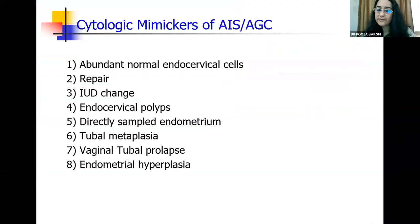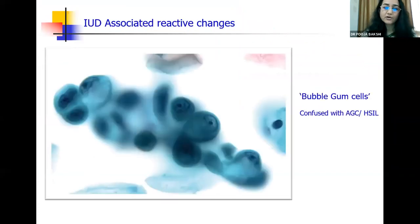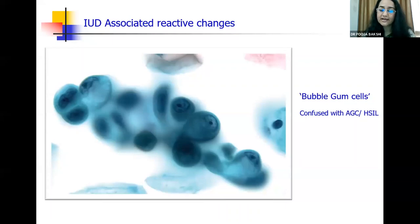There are many cytological mimickers of atypical glandular cells: always remember repair and reactive changes, IUD changes, presence of polyps, tubal metaplasia, vaginal tubal prolapse, endometrial hyperplasia — the list is long and you should be very careful before you give this diagnosis. One thing I wanted to highlight is the presence of bubble gum cells, which can be confused with atypical glandular cells or even a high-grade cell. These are all due to IUD-associated reactive changes — you see very large cells with vacuolated cytoplasm and large nuclei and nucleoli. When there is a history of an IUD, raise your bar for diagnosing an atypical glandular cell.